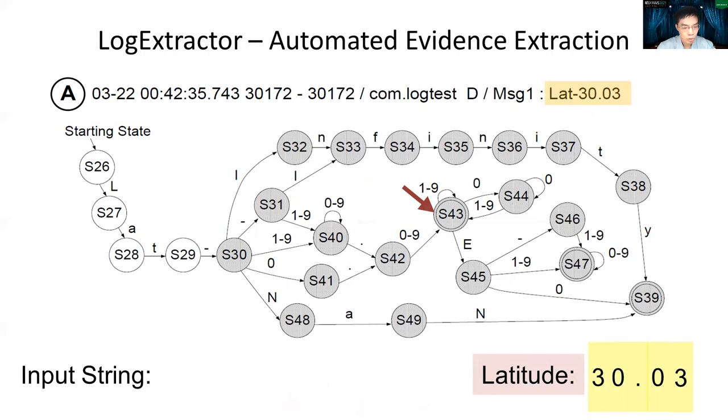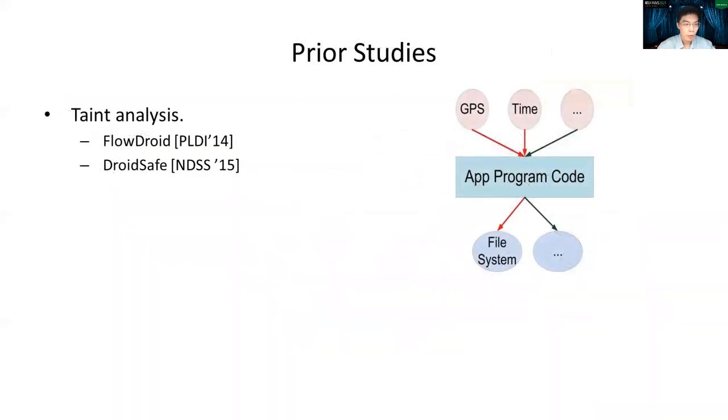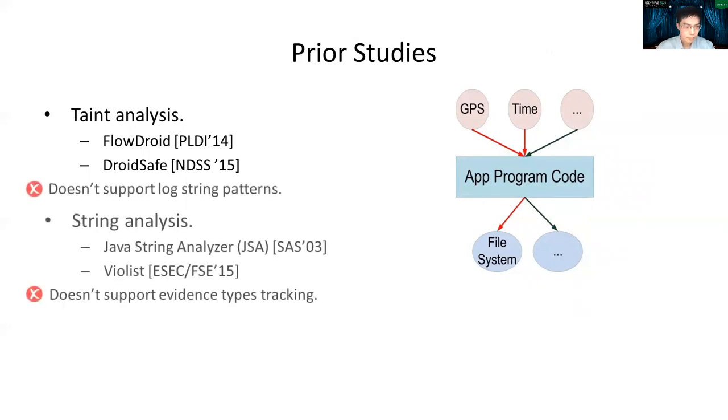Our research purpose is to use LogExtractor to answer both evidence identification and extraction problem. We find that existing studies are limited at solving their specific domain problems, but cannot help us to solve evidence identification and extraction problem in Android logging system. For example, the Android app analysis studies, such as FlowDroid and DroidSafe, as the right-hand side figure demonstrated, can only tell which type of data can be found at which category of sink like the file system. Unfortunately, they do not support the output as detailed as the log message string patterns.